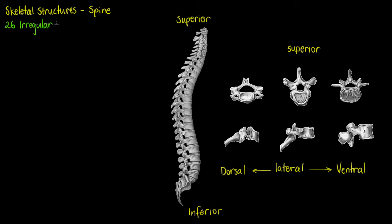One of the first things we need to know about the spine is that it is a grouping of 26 irregular bones, and it creates a highly flexible yet also very strong column. If we remember our bone types, irregular was one of the four types that we have in our body, along with long, short, and flat bones.